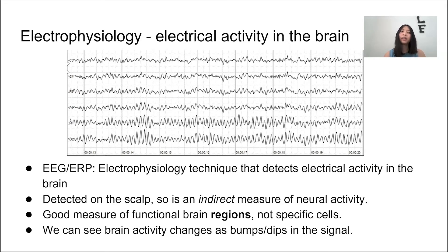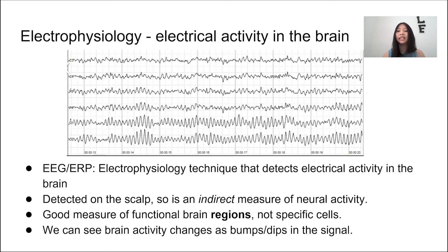However, because it's a measure of thousands or millions of cells, it's not a great measure of specific cells. Here on the screen I have a picture of what an EEG recording looks like. The signal looks like a continuous line with a bunch of bumps and dips, and that's exactly how we measure changes in brain activity — measuring those bumps and dips.